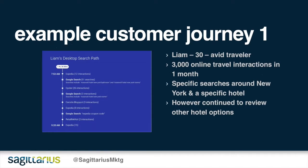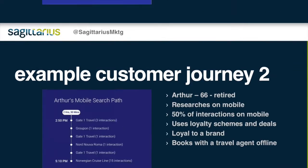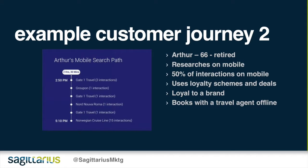Example one is Liam — he's 30 years old and an avid traveller. He specifically searches around hotel names but is still continuing to look at other brands, so he's not necessarily brand loyal. Example two is Arthur, who's 66 and retired. He researches on mobile for about 50% of his interactions but actually goes and books at a travel agency, so it's important to target him with research-type content before he goes and books elsewhere. He's also loyal to the brand but likes offers.